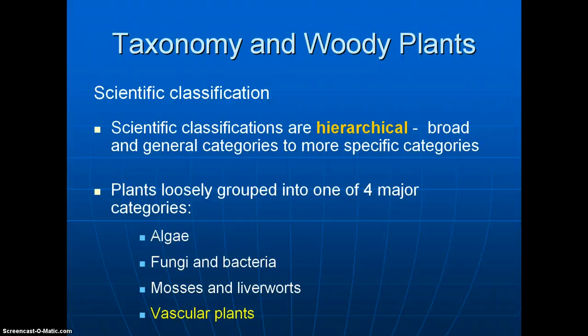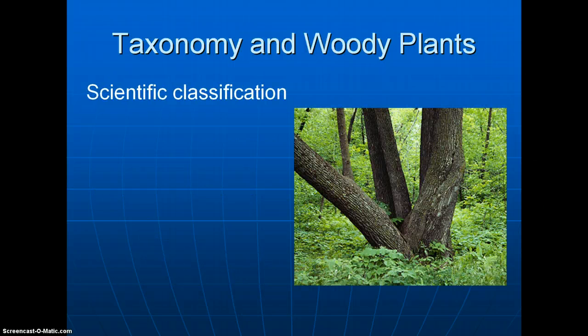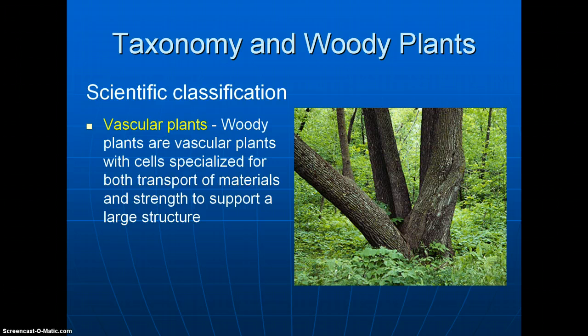At the top of the hierarchy, plants can be loosely grouped into one of four major categories: algae, which are normally found in water; fungi and bacteria, which are responsible for many plant and animal diseases; mosses and liverworts; and the big grouping we're concerned with here — vascular plants. A vascular plant has tissues specialized for conducting materials up and down the stem. Woody plants are particular vascular plants in that these conducting cells are also extra strong, supporting the large above-ground structure that persists all year round.